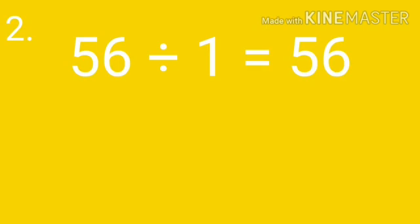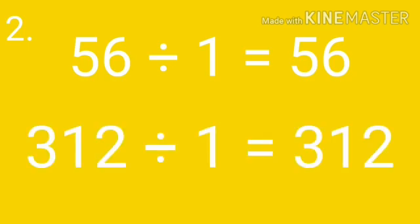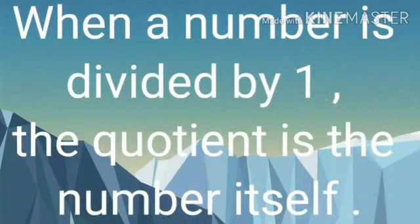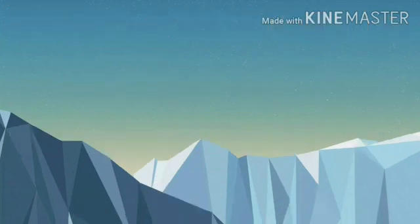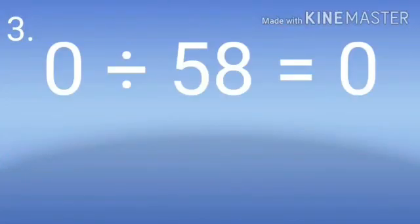We see that 56 divided by 1 gives us 56. Similarly, 312 divided by 1 also gives us the same number, 312. So the second property states: when a number is divided by 1, the quotient is the number itself.